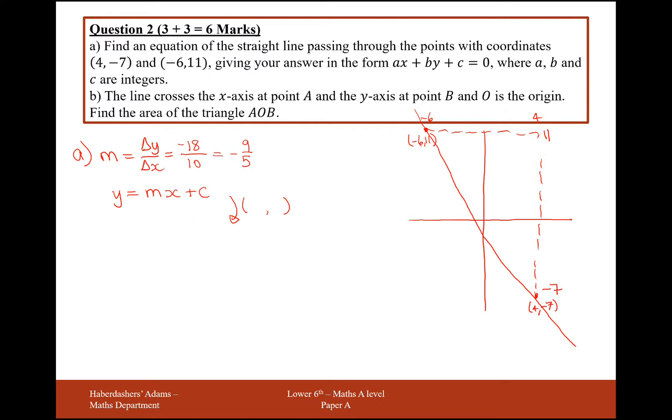So I'll plug in the value (-6, 11). This -6 is going to be representing the x coordinate, the 11 here is going to be representing the y coordinate, and m I'm going to substitute in as -9/5. So y is 11 = -9/5 times -6, add on c.